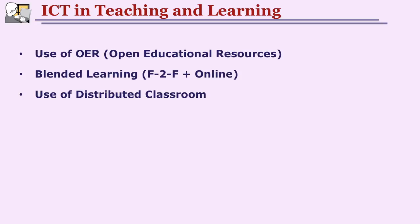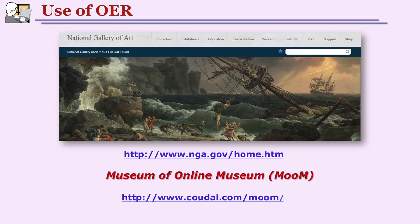Some uses include OER, blended learning, and use of distributed classrooms. Open educational resources can be used for the teaching-learning process. For example, there are museums online that are free — there is a site called Museum of Museums (MOM). If you go on MOM, you will find hundreds of museums, whether you want to know about natives, tribes, or something else. All those museums are available there free of charge. You can select an appropriate and relevant resource, take students there, or tell students to explore with specific objectives set before them.